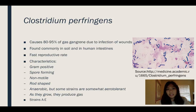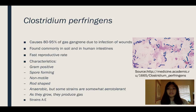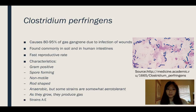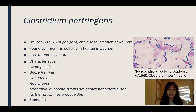Gas gangrene is caused by a bacteria called Clostridium perfringens, and it is due to the infection of a wound, usually a surgical wound. This type of bacteria is found commonly in the soil and in human intestines, and it has a very fast reproductive rate — about 6 to 8 minutes. The characteristics of this particular bacteria are that it's gram-positive, it forms spores, it's non-motile, and it's rod-shaped, so it's a bacillus.